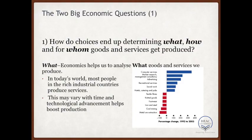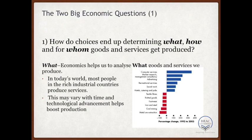What economics helps us to analyze is basically what goods and services we should produce. If you carefully see this graph, it's a transition of the UK's production of goods and services over the period of 1992 to 2003. As the UK progressed over these years towards development, they shifted their production and service pattern — producing much more of computer services, market research, and so on, shown in the blue shaded region, and producing less of textile fiber needed goods, shown in the red shaded region. Economics helps us to understand why these transitions and shifts happen.